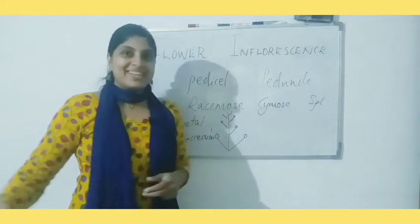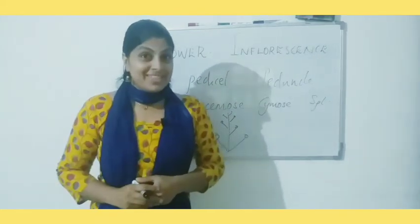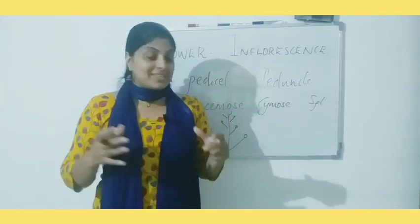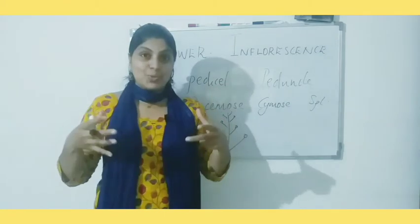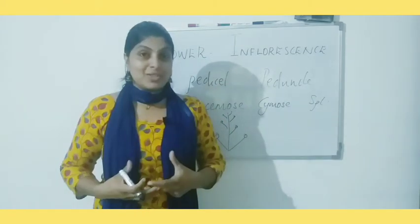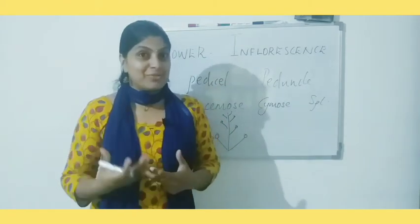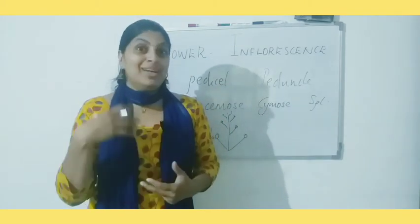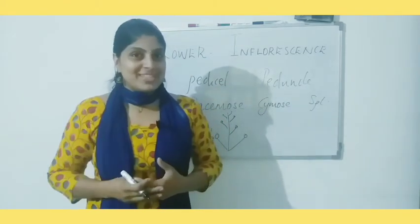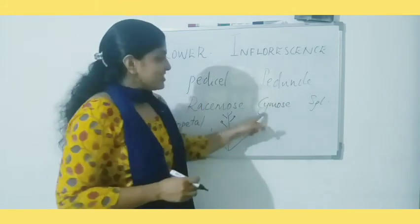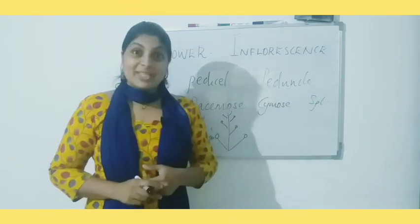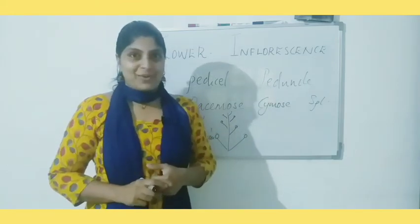This type of arrangement of flowers is known as acropetal succession. Acropetal succession means the older flowers are arranged towards the base of the stock and the younger flowers are towards the topmost region of the stock. The second case is cymose inflorescence.